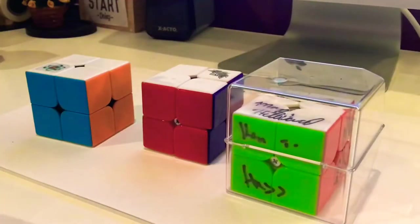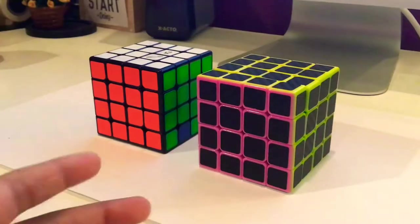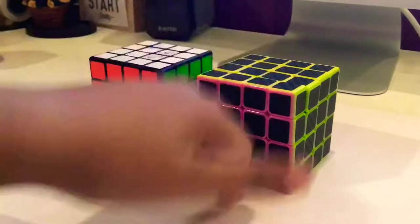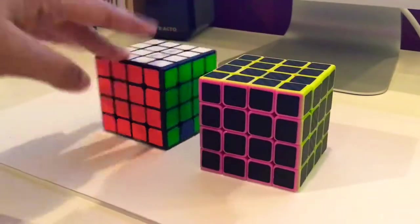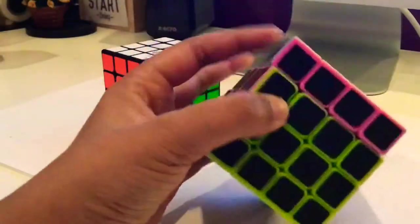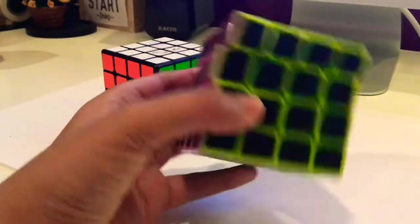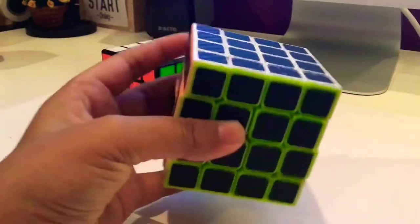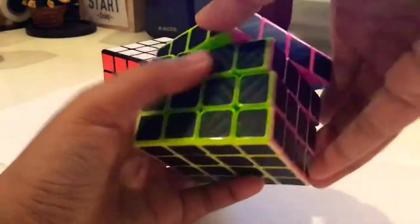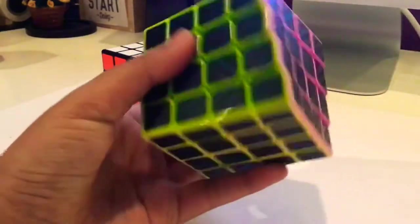Going on to 4x4s, I only have two 4x4s. This is my first 4x4 and this is my second. This is a Z cube carbon fiber 4x4 which I got off Amazon. Overall, the turning's okay, corner cutting's not really there, but the turning's really nice and it's just overall a fun cube to use.